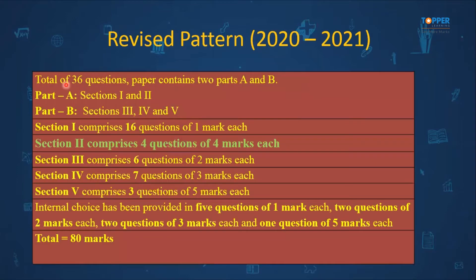The revised pattern consists of a total of 36 questions and the entire paper is divided into two parts: Part A and Part B. In Part A there are two sections — section one and two — and in Part B there will be three sections: three, four and five. The new typology introduced is in section two, which comprises four questions of four marks each. This is the case study question, which is the new typology.